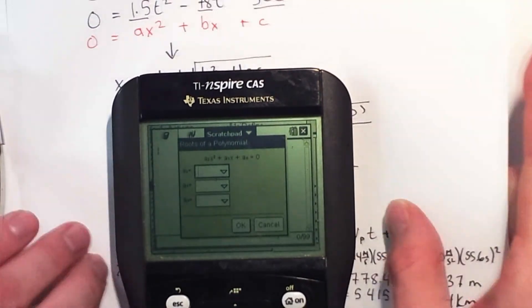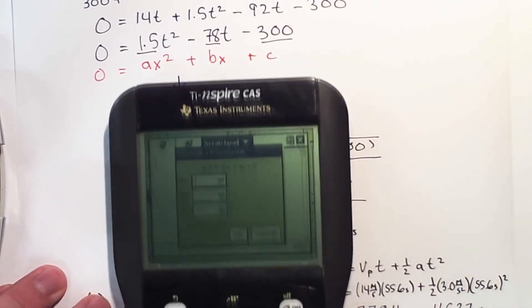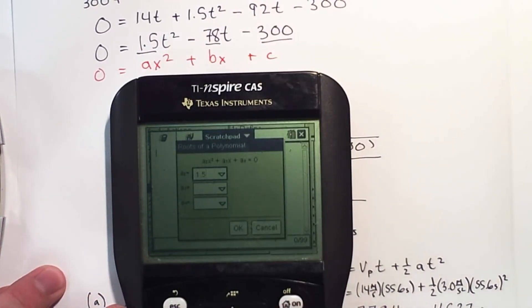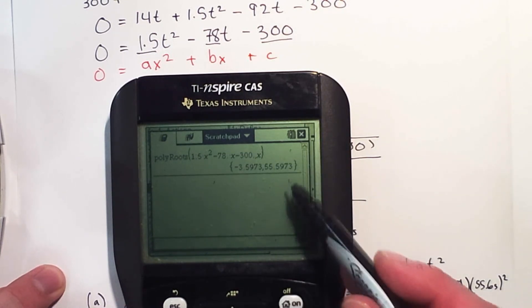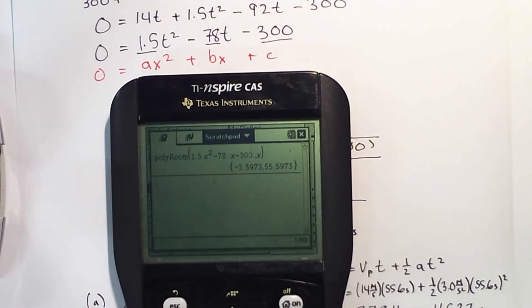So where's my, let's bring down my form here. So just plug it in. 1.5. Tab, negative 78. Tab, negative 300. Polyroots. There are my two roots without actually doing a lot of work.